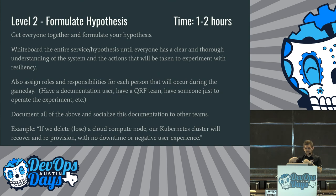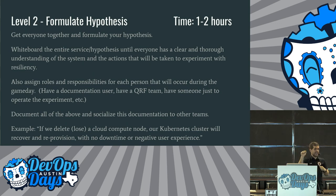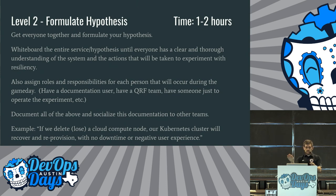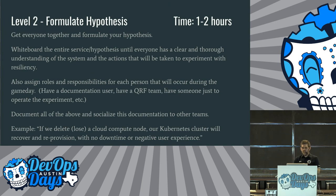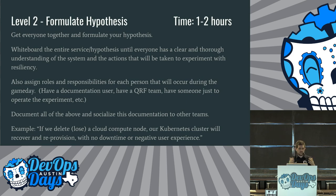Assign roles and responsibilities — for instance, a documentation person just writing how things go and what happened when. Have a quick reaction force team standing by: if something goes wrong in your experiment, you can hit that big red button that says stop and someone can triage and get users back to their normal experience. Have someone just operate the experiment — like a pilot pressing buttons when told. Make sure documentation is socialized to teams about what you're about to do. Example hypothesis: if we delete or lose a cloud compute node, our Kubernetes cluster will recover and reprovision with no downtime or negative user experience, internally or externally.